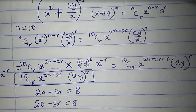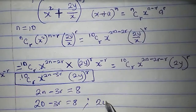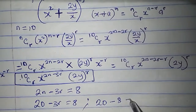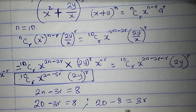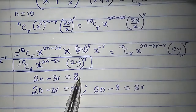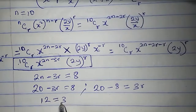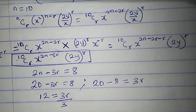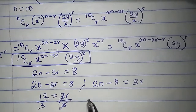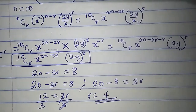So let's solve for r. Collecting like terms: 8 will cross and turn to minus, minus 3r will cross and turn to plus 3r. 20 minus 8 is 12. Divide both sides by 3 — r is equal to 4. So r is 4 and n is 10.